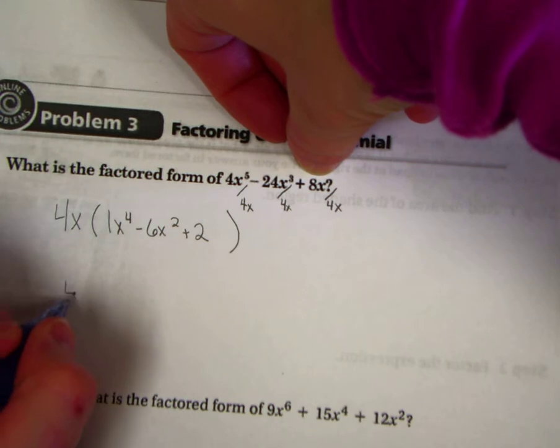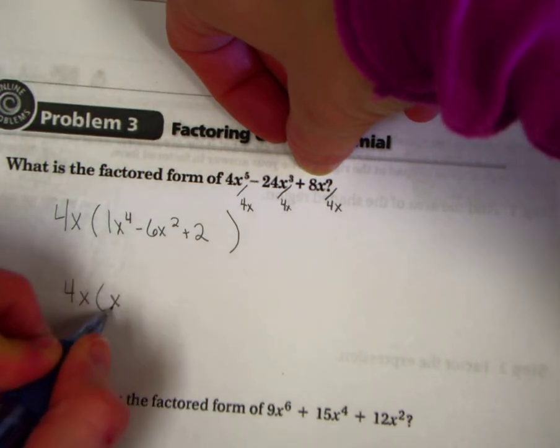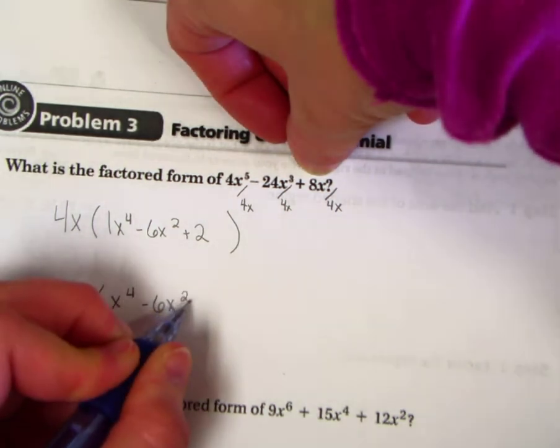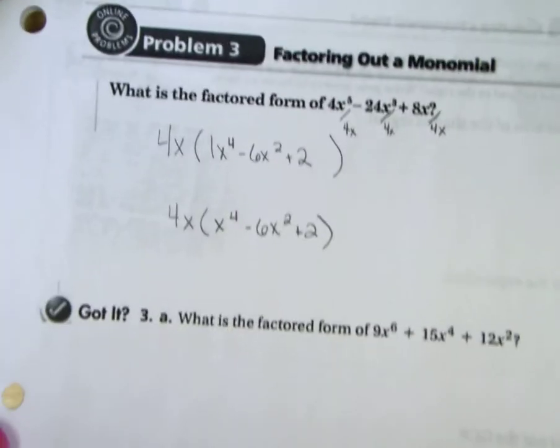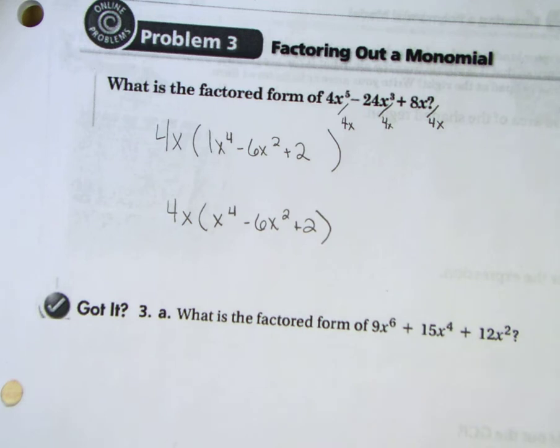If you want to rewrite it, you just don't put the 1 in front of the x^4. That is what we call the factored form of that particular polynomial.